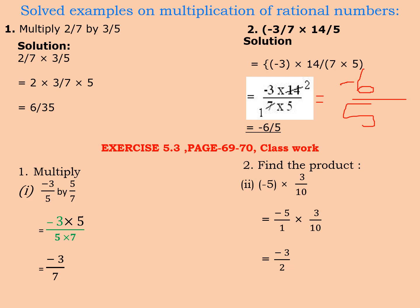Now let us move to exercise 5.3 of page number 69 and 70. Very simple things, again they are multiplying here. The question is saying to multiply minus 3 by 5 by 5 by 7. What we will do? We will multiply the numerators and the denominators as is. Here when you will see, this 5 will be cancelled by 5. Now minus 3 into 1 will be minus 3, 1 into 7 will be 7.